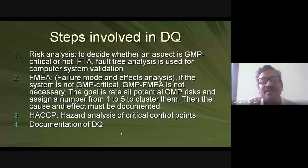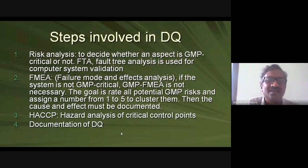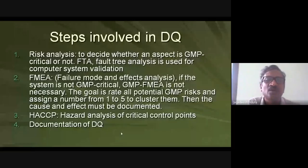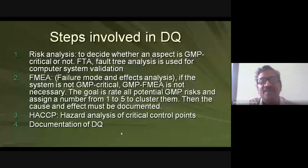The goal of FMEA is to rate all potential GMP risks and assign a number, say one to five. For example, charging speed and RAM in a mobile phone are critical parameters — similar to GMP-critical parts of a machine. The part rated highest, say five, is GMP critical, while one is least critical. The cause and effect must be documented: what happens if you don't purchase a particular part or model.